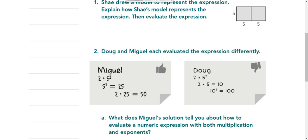And as we talked, we saw how Miguel did the exponent first. He did 5 to the second power, which would be 25, and then he multiplied it by 2 to get 50.